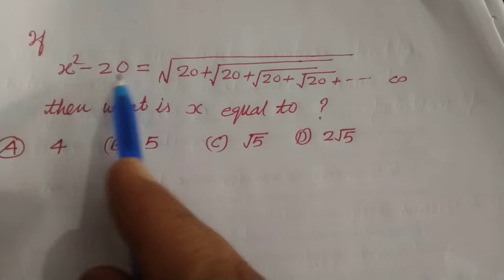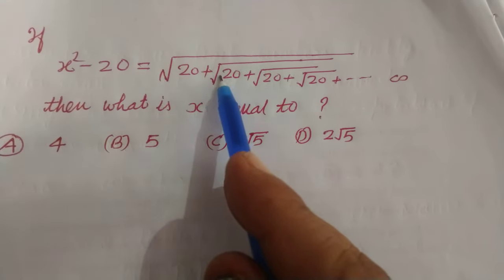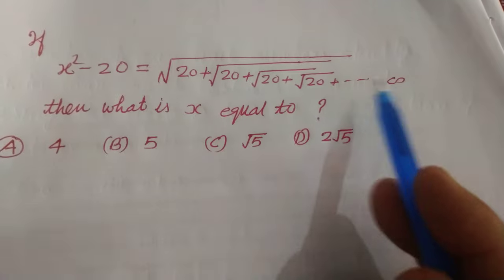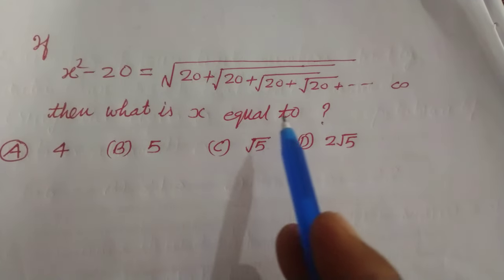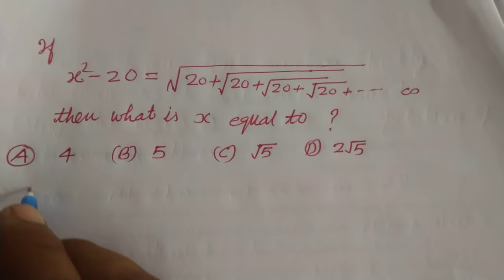X square minus 20 equal to root 20 plus root 20 plus root 20 and so on. Then what is the value of X equal to.